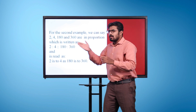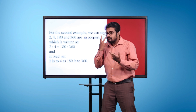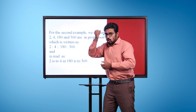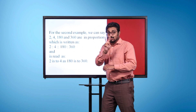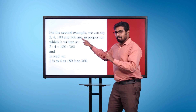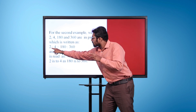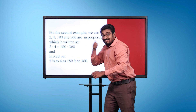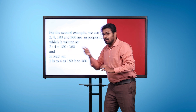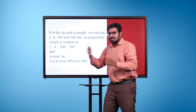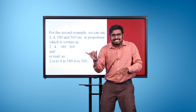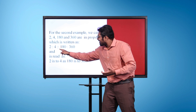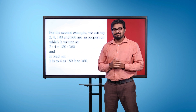For the second example, we can say 2, 4, 180, and 360 are in proportion, which is written as 2 is to 4, double colons, 180 is to 360, and is read as 2 is to 4 as 180 is to 360.